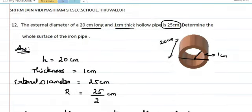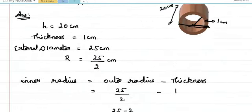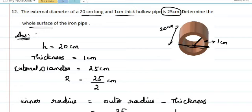To summarize what is given: height of the pipe is 20 centimeter, thickness is 1 centimeter, external diameter is 25 centimeter. From that, capital R is 25 by 2. To find small r, we subtract thickness from outer radius, giving 23 by 2. Now we need to determine the whole surface area of the pipe. This includes inner curved surface area, outer curved surface area, plus the area of the thickness rings — 2 times the area of the circular ring at top and bottom — giving the whole surface area.